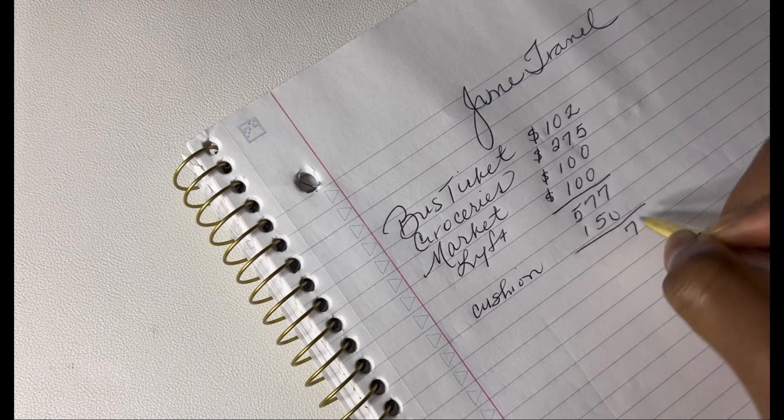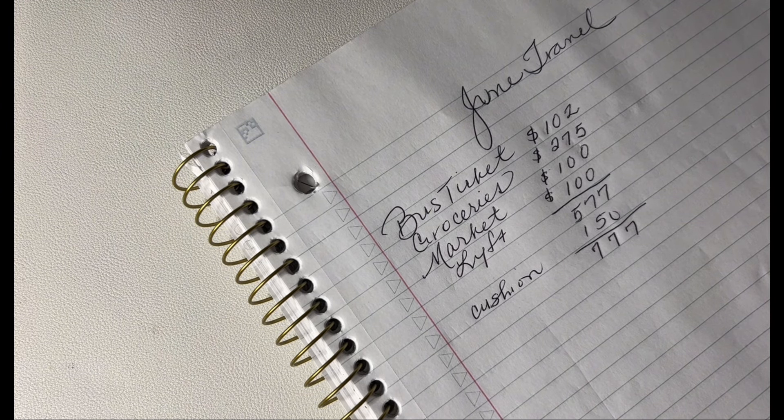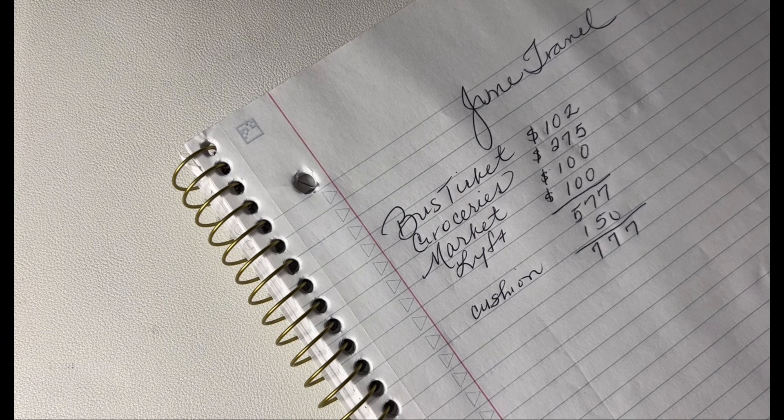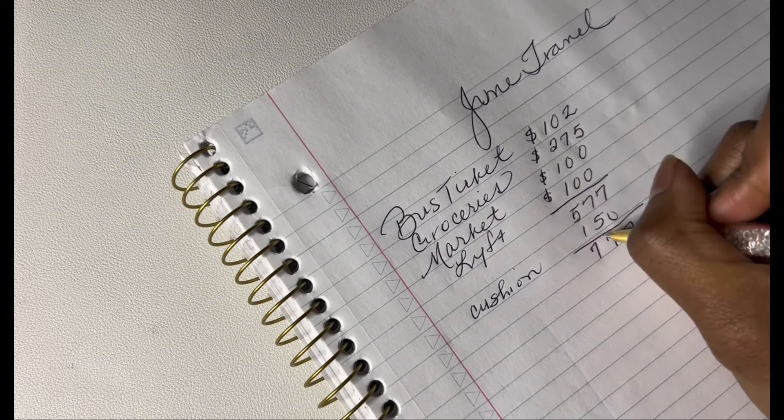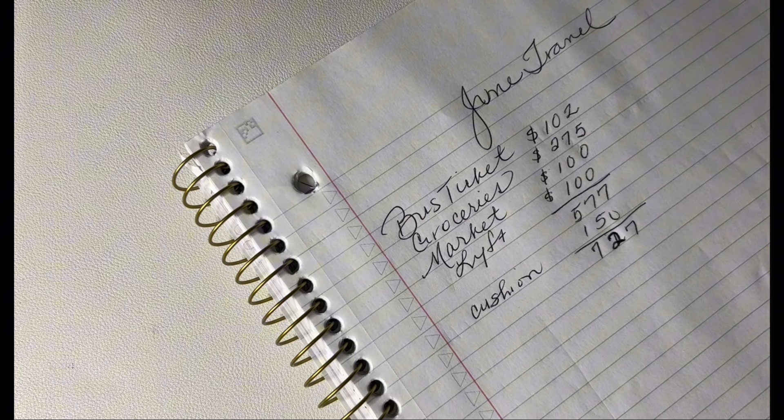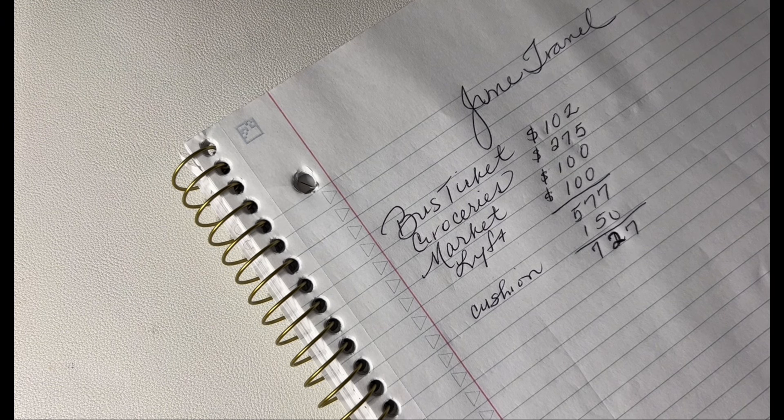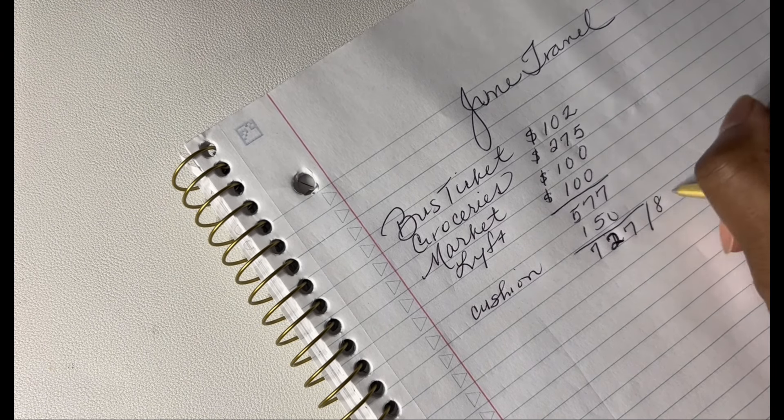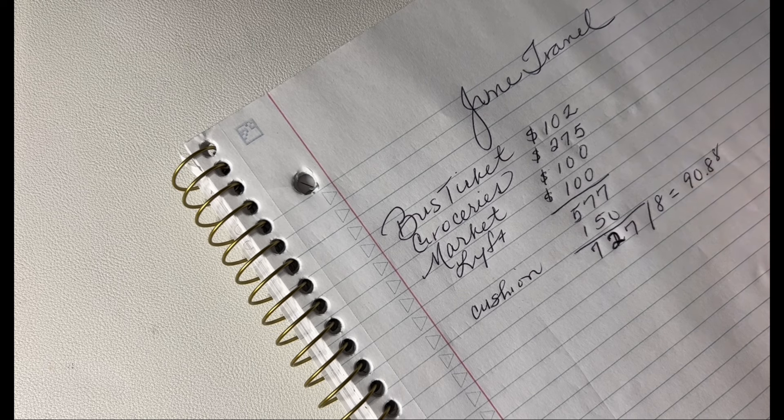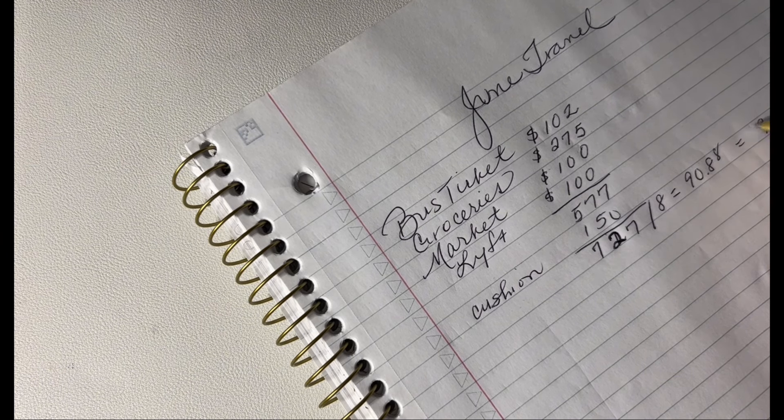And that's going to be a total of $777. Let me just make sure my math is right: $102, $275, $100, $100, and $150. Oh no, that's actually $727. Okay, so I'm going to divide this amongst eight pays, so that is $727 divided by 8. It's $90 and 88 cents, but we're going to round that up to the nearest dollar, so in actuality it would be $91.